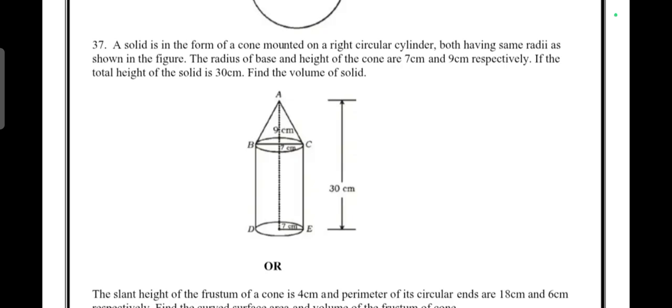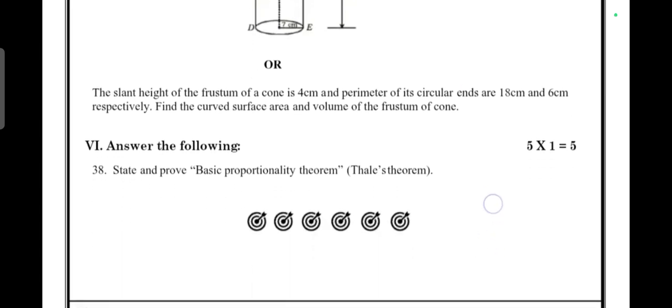The radius of the base and height of the cone are 7 cm and 9 cm respectively. If the total height of the solid is 30 cm, find the volume of the solid.